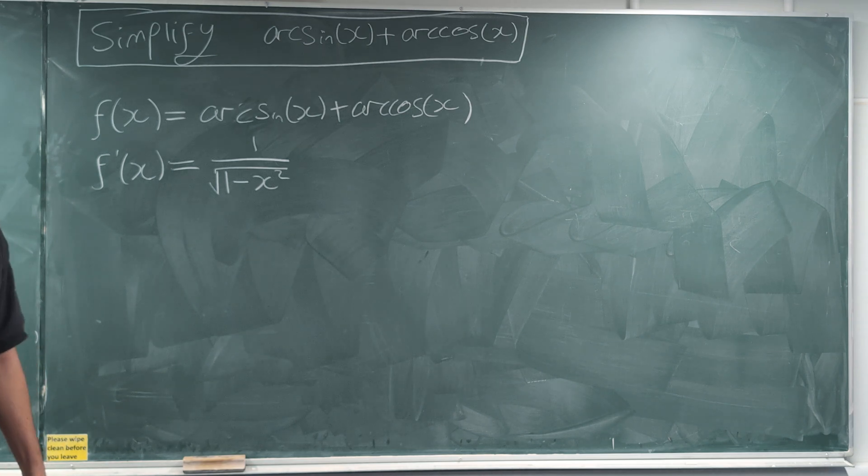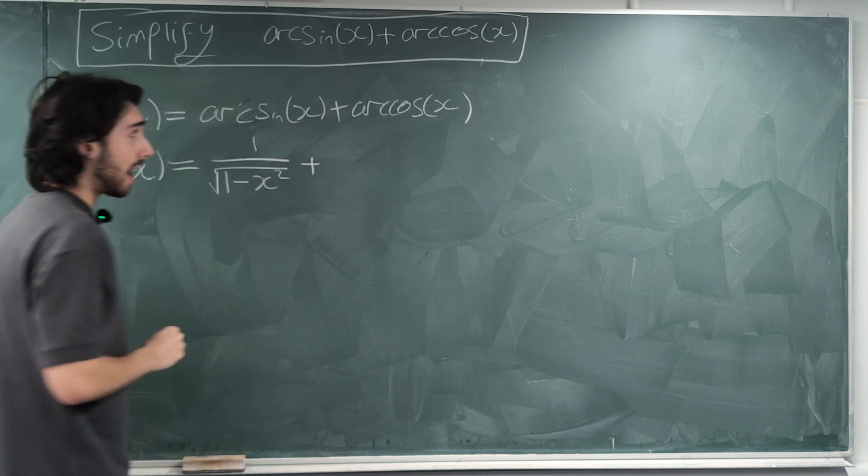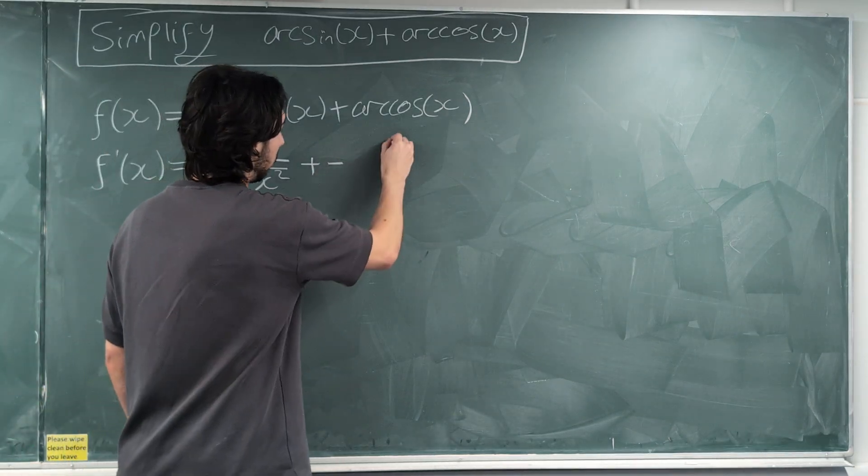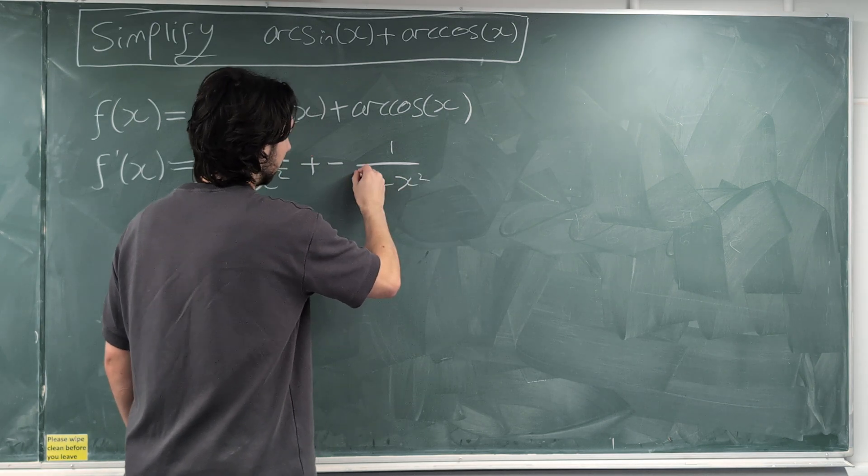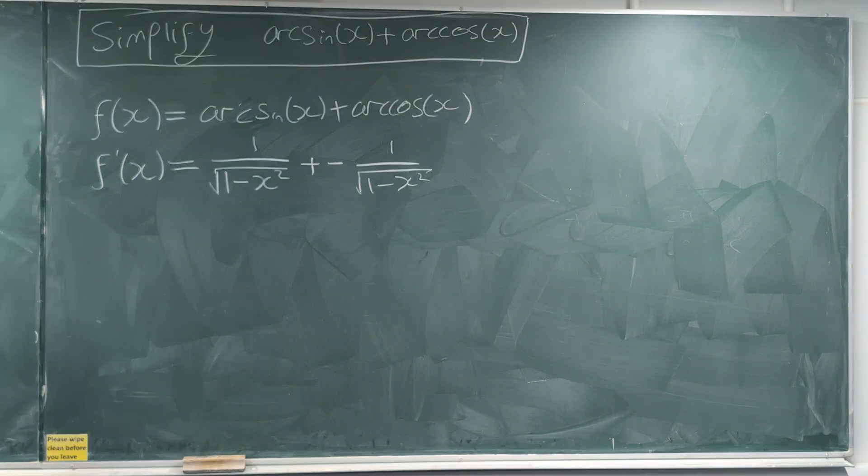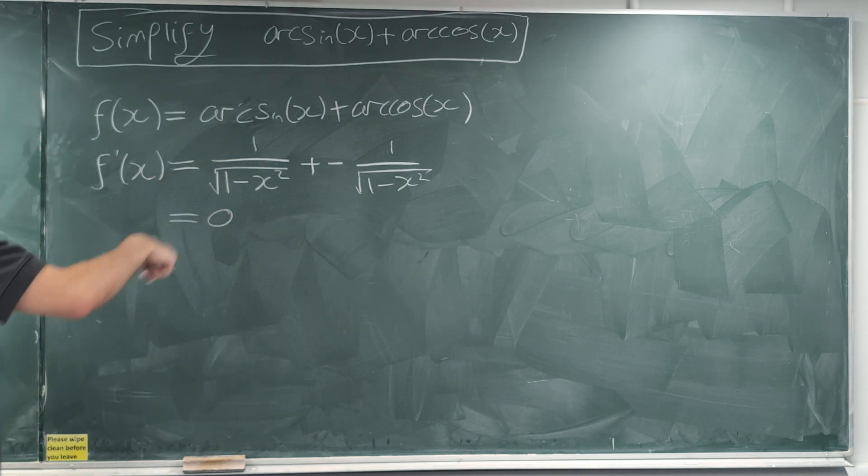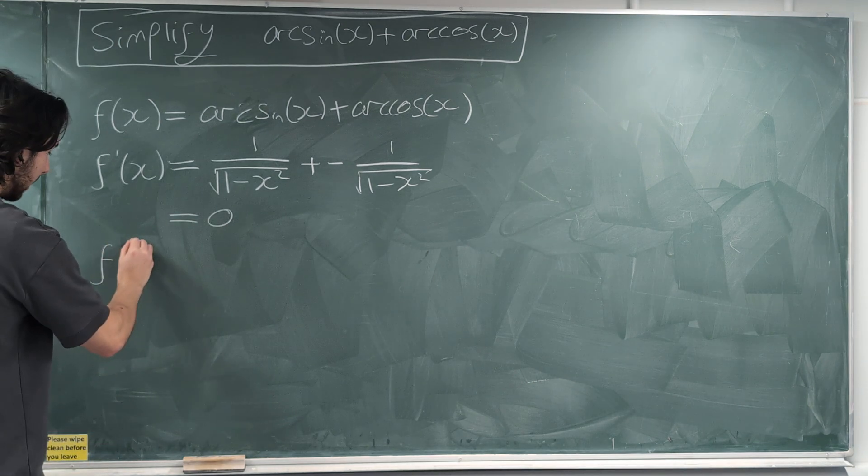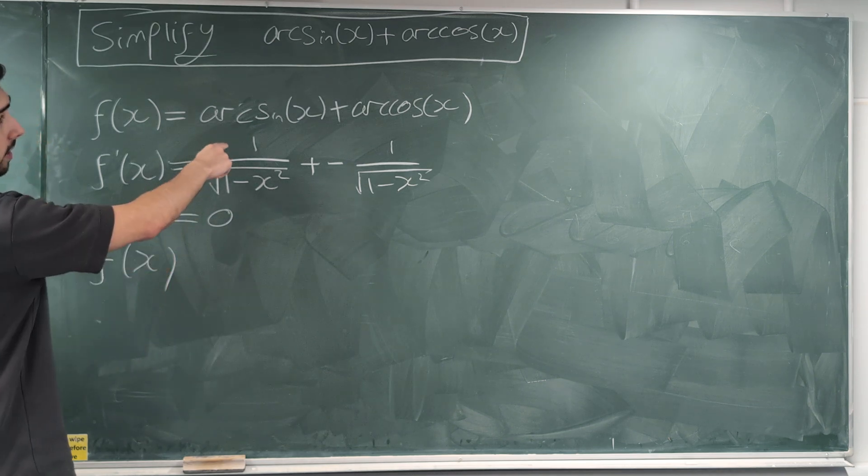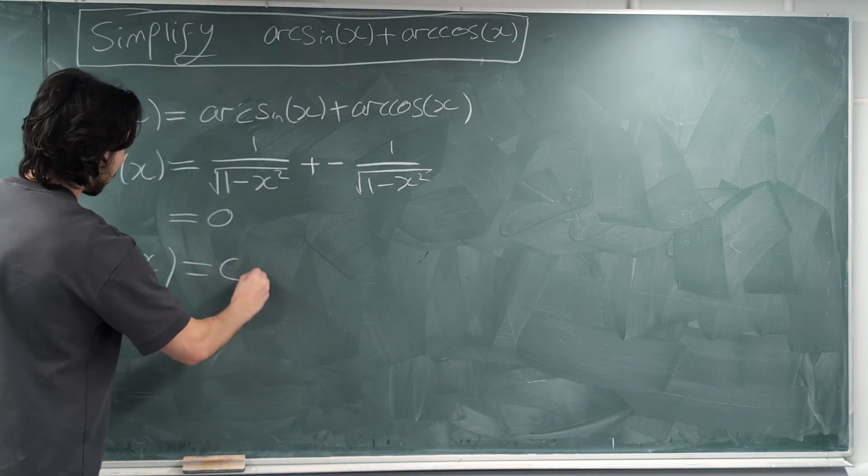And arccos, okay? I don't have a video on this, but take my word for it. Arccos actually differentiates to -1/√(1-x²). Yeah, it's true. So, this simplifies to 0, because it's just the same thing minus the same thing. So, the derivative of a function is 0. That means that f(x), which was arcsin(x) + arccos(x), must be a constant by integrating both sides, right?